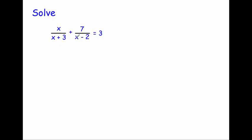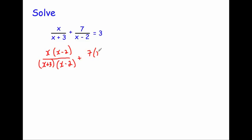This example looks very similar to the first, but this time we've got x on the numerator as well. We're going to times both the numerator and denominator of the first fraction by x minus 2, and times the numerator and denominator of the second fraction by x plus 3. So the first fraction becomes x times bracket x minus 2, over bracket x plus 3 bracket x minus 2. Adding the second fraction: 7 times bracket x plus 3, over bracket x minus 2 bracket x plus 3. That equals 3.